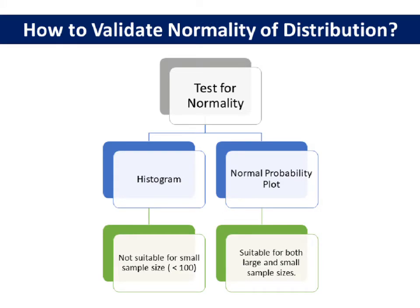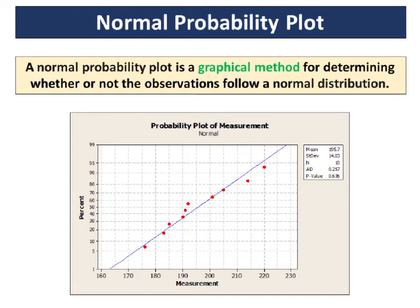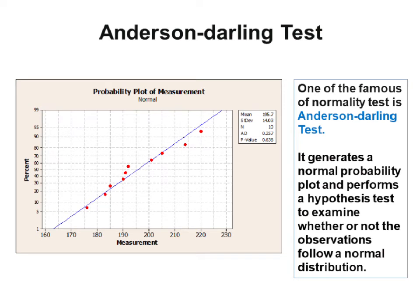There are two methods of determining the normality of the distribution, which are histogram and normal probability plot. Histogram is not suitable for small sample size, which is less than 100. In contrast, normal probability plot is suitable for both large and small sample sizes. A normal probability plot is a graphical method for determining whether or not the observations follow a normal distribution. One of the famous normality tests is the Anderson-Darling test.